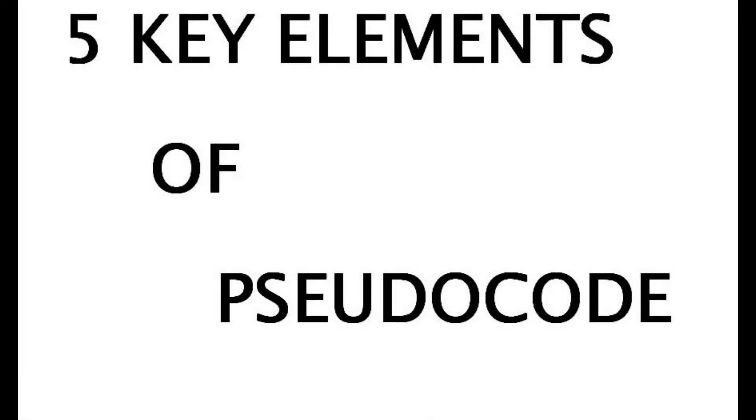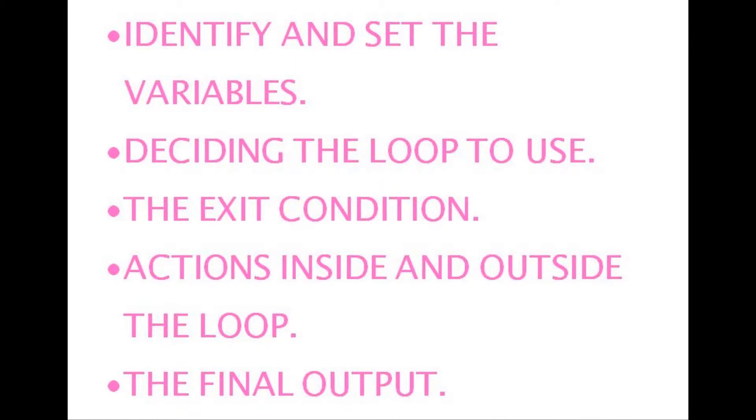There are five key elements of pseudocode: identifying and setting the variables, deciding the loop to use, the exit condition, actions inside and outside the loop, and the final output.